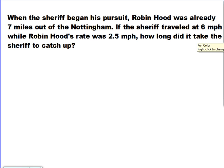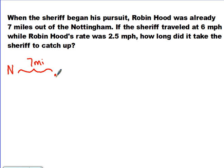Let's do the next example together. When the sheriff began his pursuit, Robin Hood was already 7 miles out of Nottingham. The sheriff traveled at 6 miles per hour while Robin Hood's rate was 2.5 miles per hour. How long did it take the sheriff to catch up? Drawing this out: if Nottingham is the starting point, Robin Hood was already 7 miles away when the sheriff began. So the sheriff started at Nottingham and had to go catch Robin Hood.